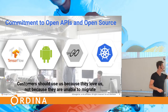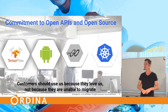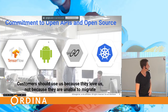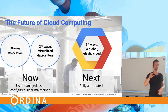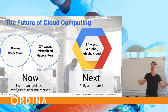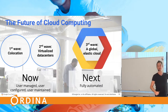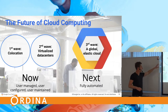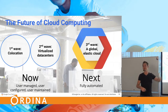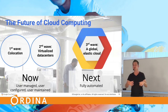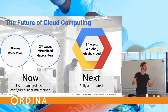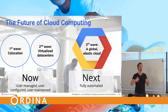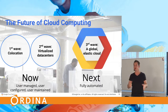Customers should use Google because they love it, not because they're unable to migrate away - that's the core idea. About the vision: what is the future of cloud computing? The first wave was people co-locating servers together, sharing cooling, backup generators, electricity, and security. But the data was still owned by the company itself and they still had capital expense upfront.